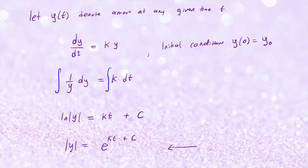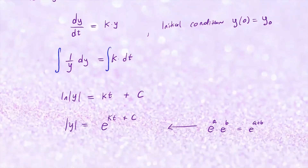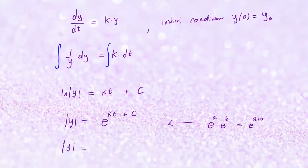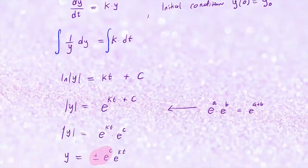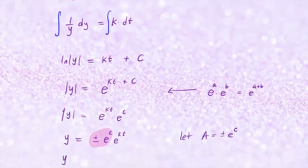Now we're going to use the laws of exponents. If you have e to the a times e to the b, that's e to the a plus b — so we can add the exponents. I'm going to separate the right-hand side into two pieces: absolute value of y equals e to the kt times e to the c. To remove the absolute value, y equals plus or minus e to the c times e to the kt. Notice that plus or minus e to the c is just a constant, so we let a stand for that, giving us the general solution y equals a times e to the kt.